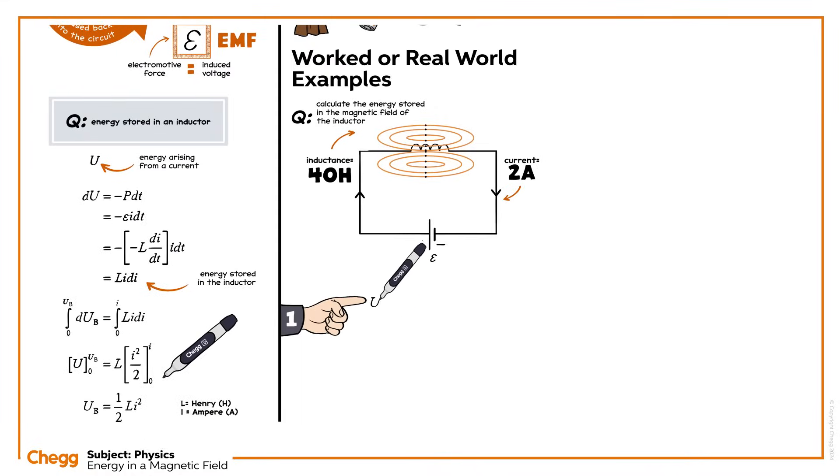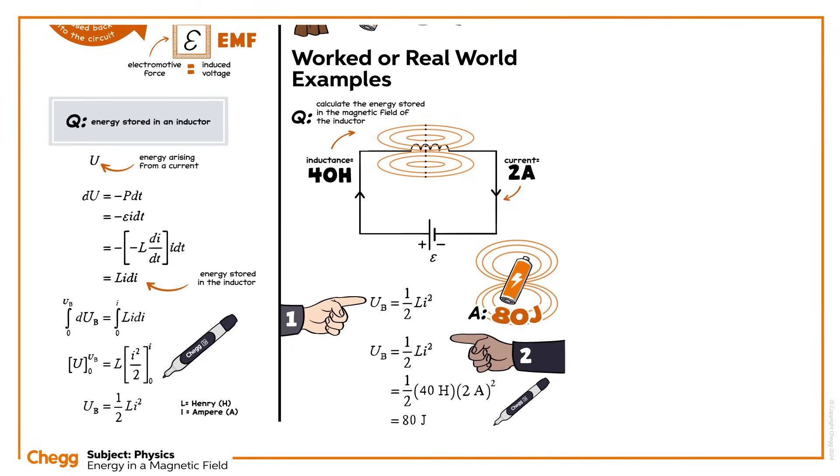Step one is to write the expression for the energy stored in the magnetic field of an inductor. Then, fill in the inductance, 40 Henry, and the current, 2 amperes, and solve. Hence, the energy stored in the magnetic field of an inductor is 80 joules.